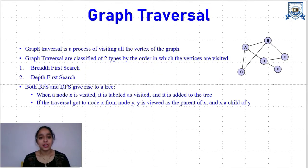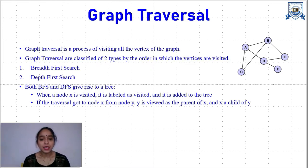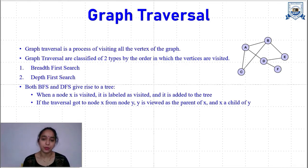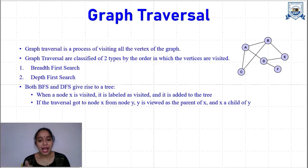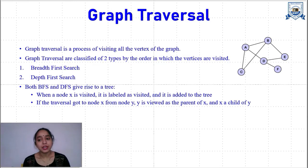First, with the graph traversal technique — what do you mean by graph traversal? Traversal means it's a process of visiting each and every node. Graph traversal means visiting all the nodes of the graph. This visiting means that we need to access each vertex of a graph only once. In an undirected graph we are traversing each and every vertex only once.